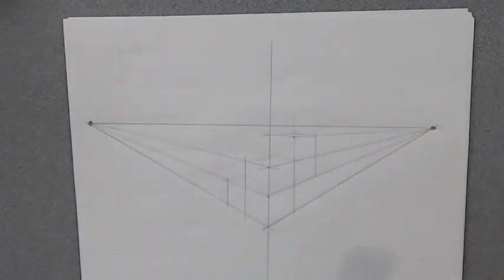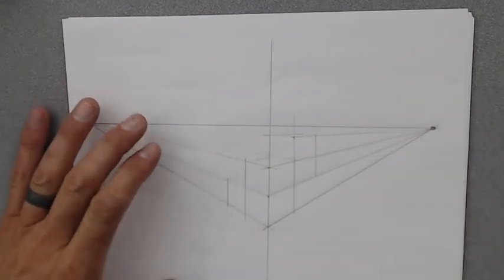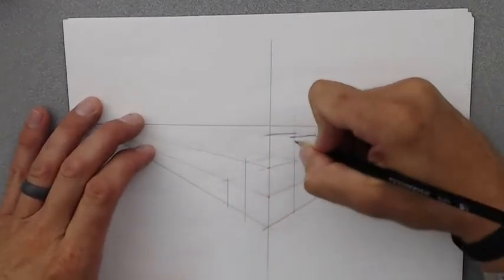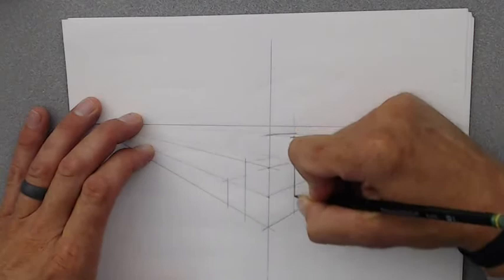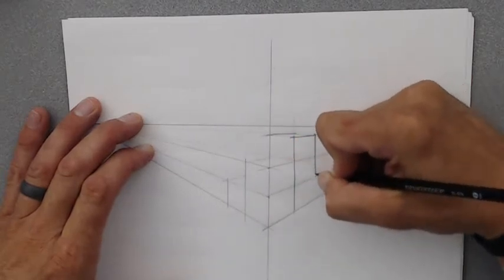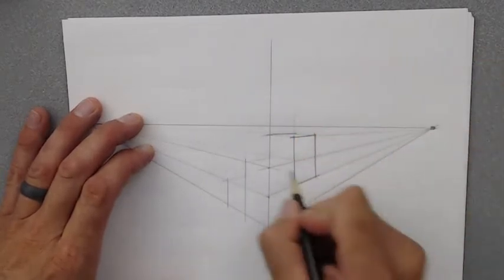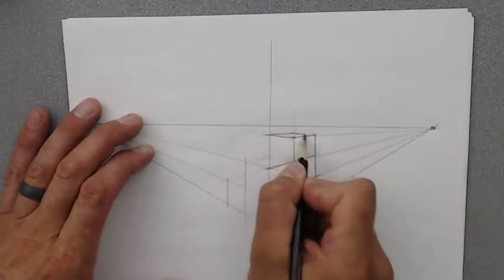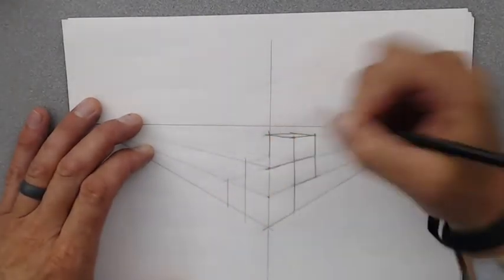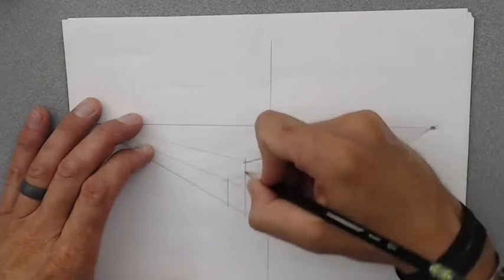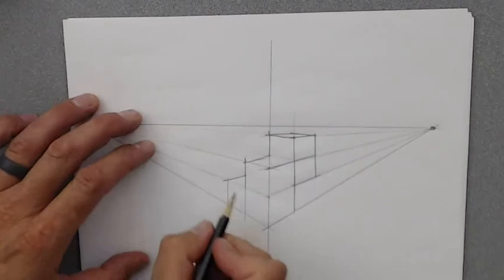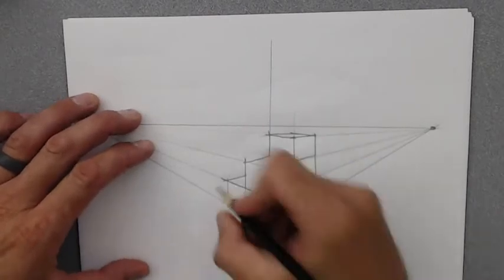Once we have that sketched in, I'm going to do the same thing. So I've got my super light lines, like my construction lines. Now I'm going to come back in and I'm going to make my object lines stand out a little bit more. At this point definitely don't do the straight edge thing, it'll have a lot more character.